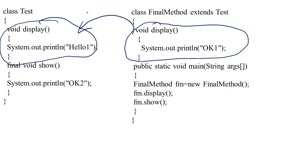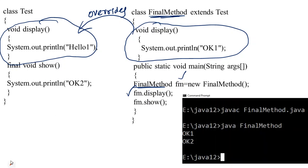So this subclass display method overrides the superclass display method. In the main method I am creating an object for the subclass: class name, object name fm, equal to new class name. Then I call fm.display(). Since display is in both the subclass and the superclass, the subclass method overrides the superclass method. The output you get is 'ok 1' — that is the subclass version of display.